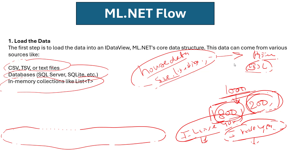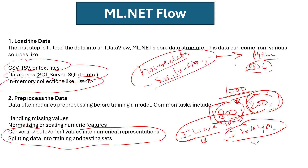After loading the data, the next step is pre-processing before training the model. Data requires transformation — the key task being converting categorical values into numerical representation, because machines can only understand numerical values. For example, text like 'I love you' or 'I hate you' must be converted to numbers so the machine can understand it.